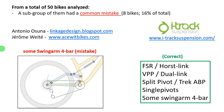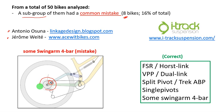Recently, two suspension experts — Antonio Ozuna from Linkage Design and Jérôme Oite — alerted me to a common mistake that I did in a particular subgroup of bikes. So, eight bikes from the 50 total analyzed. This group of bikes is called the Swingarm 4-bar, where the rear pivot is above the rear wheel. I already deleted those videos and I'm sorry for that.